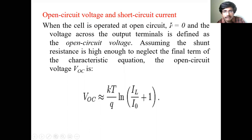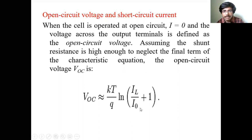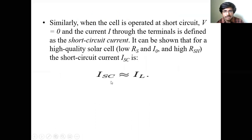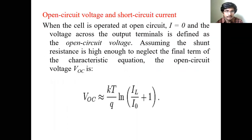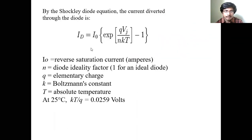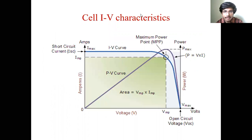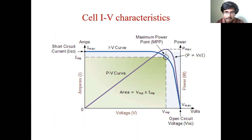Open circuit voltage and short circuit current: the expression for open circuit voltage across the solar cell is VOC ≈ (kT/q) × ln(...), and the short circuit current is equal to IL. Here is the cell IV characteristic curve. The open circuit voltage is VOC, and VMAX is obtained when the load is connected to the solar cell. When it is short-circuited, the voltage will be zero but the current will be maximum.